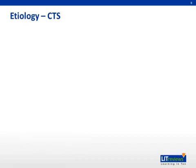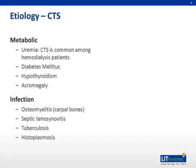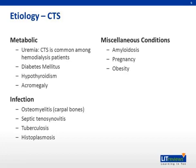Other medical conditions that predispose patients towards developing carpal tunnel syndrome include metabolic states and illnesses like uremia, especially among patients receiving hemodialysis, diabetes, hypothyroidism, and acromegaly. Infectious etiologies including osteomyelitis of the carpal bones or septic tenosynovitis of the flexor tendons, tuberculosis, histoplasmosis, and others can cause CTS. Other miscellaneous conditions such as amyloidosis, pregnancy, and obesity have also been implicated in disease pathogenesis. Despite all the potential risk factors, many cases are simply categorized as idiopathic with no identifiable underlying cause.